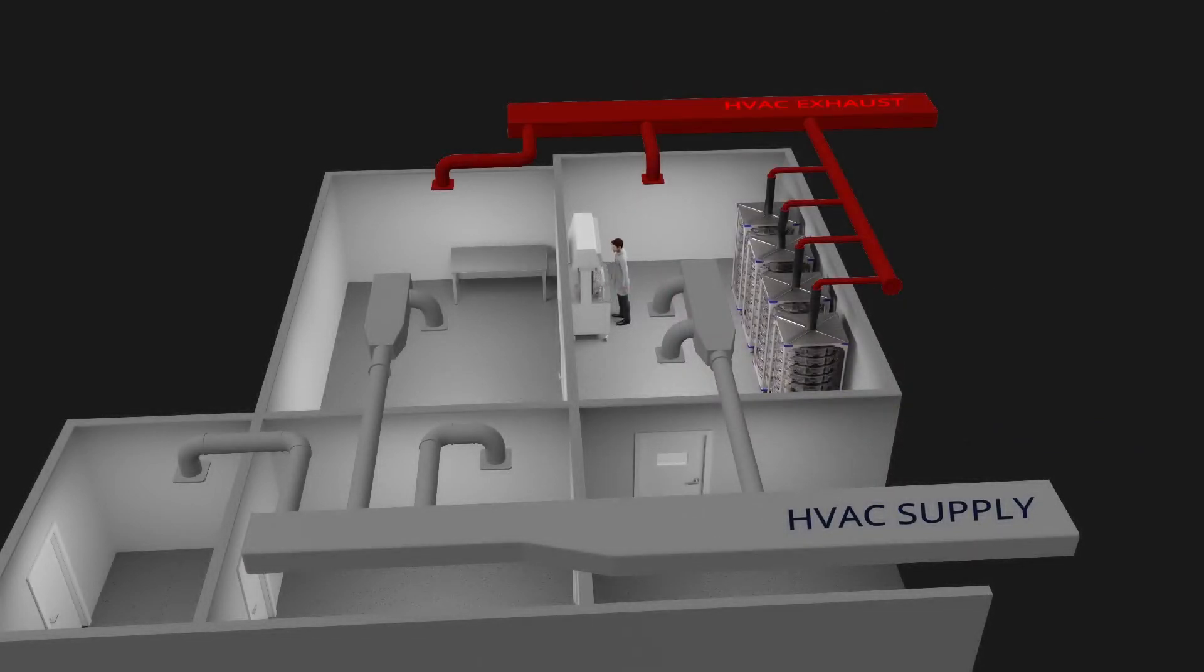The rack has one central plenum that captures the exhaust from all the cages on the rack.